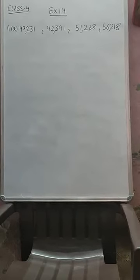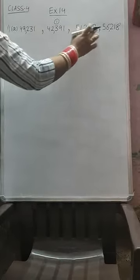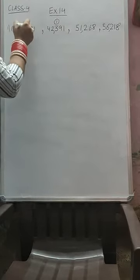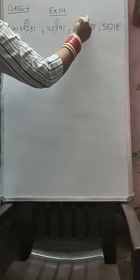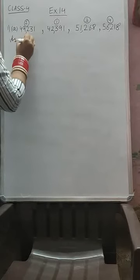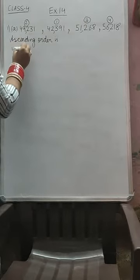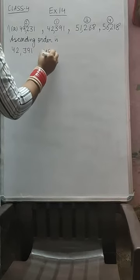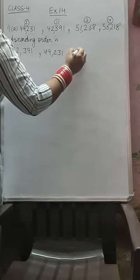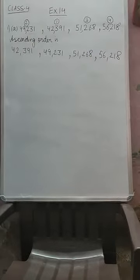Now we have to arrange in ascending order. Ascending order starts with the smallest number. The smallest number here is 42,000 something — that is 42,391. The second number is 49,231. After this we write 51,268. And the last is 56,218. So ascending order is: 42,391 then 49,231, then 51,268, and last 56,218.